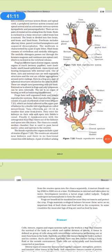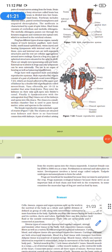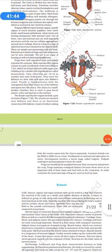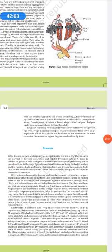Frogs have a well-organized male and female reproductive system. Male reproductive system consists of a pair of yellowish ovoid testes which are found adhered in the upper part of the kidneys by the double fold of the peritoneum called mesorchium. Vasa deferentia are 10 to 12 in number and then finally it communicates with the urogenital tract that comes out of the kidneys and open into the cloaca. Cloaca is small, median chamber that is used to pass the fecal matters. In female reproductive system, there are ovaries which are situated near the kidneys and there is no functional connection with the kidney. A pair of oviduct arising from the ovaries opens to the cloaca separately and a mature female can lay around 2,500 to 3,000 ova at a time. Fertilization is external. We know there is a development of larval stage which is a tadpole and from the tadpole this metamorphosis takes place to form the adult. Frogs are beneficial for mankind because they eat insects and protect the crop. Frogs maintain ecological balance because they serve as important links of food chain and food webs in the ecosystem. In some countries the muscular legs of the frog can be used as food.